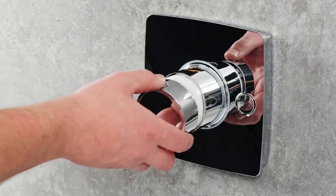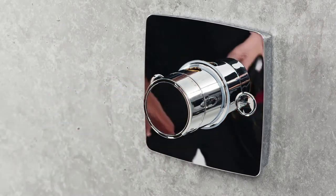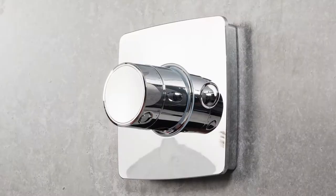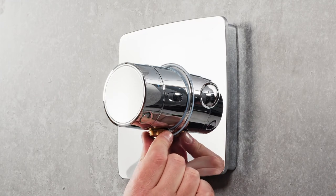The temperature dial can then be clipped into place, aligning the top of the cartridge with the temperature override button on the dial. The outlet connector can then be secured into place using the installation tool provided.